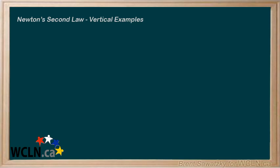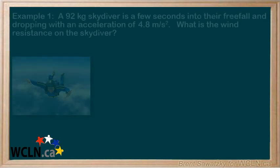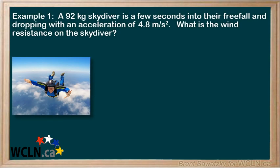In this video, we'll switch things up a tad and consider the force or dynamics problems in a vertical direction. Example 1. A 92 kilogram skydiver is a few seconds into their freefall and dropping with an acceleration of 4.8 meters per second squared. What is the wind resistance on the skydiver?